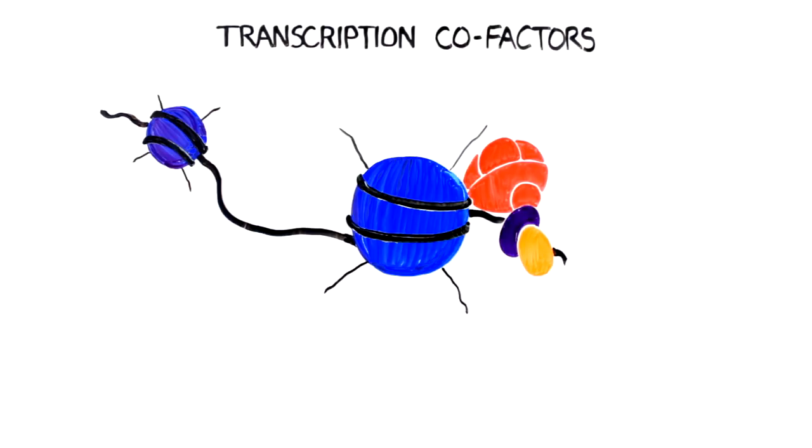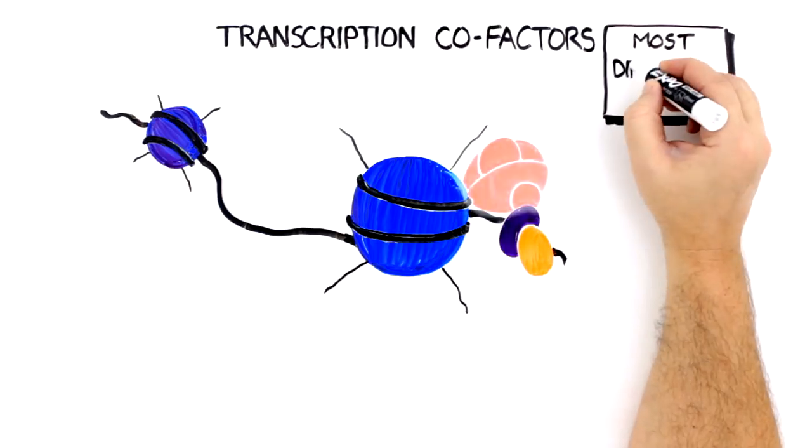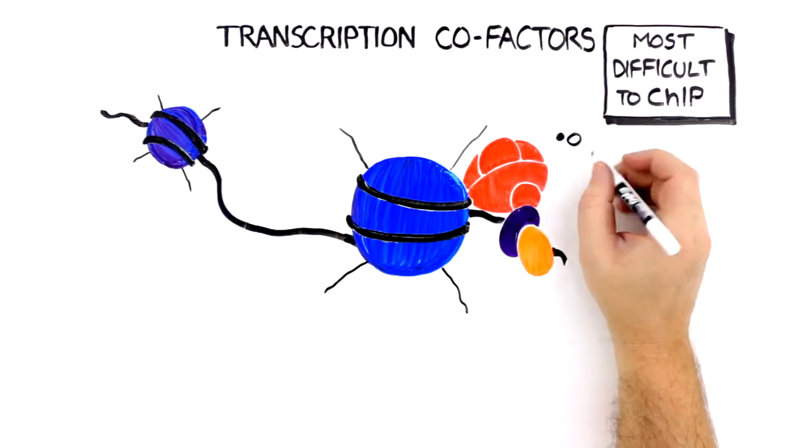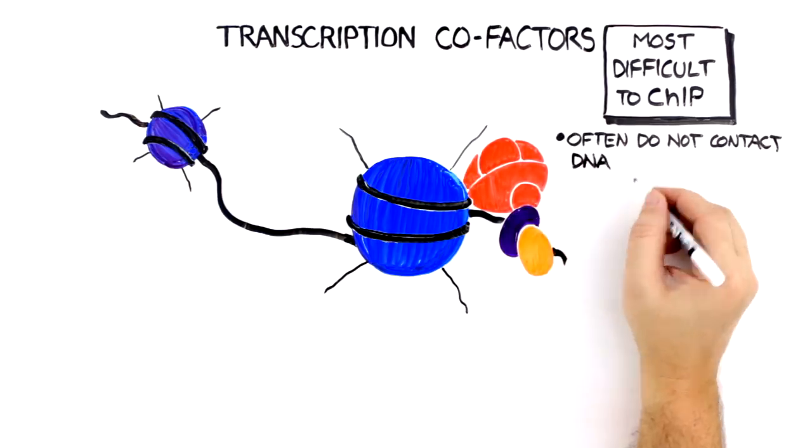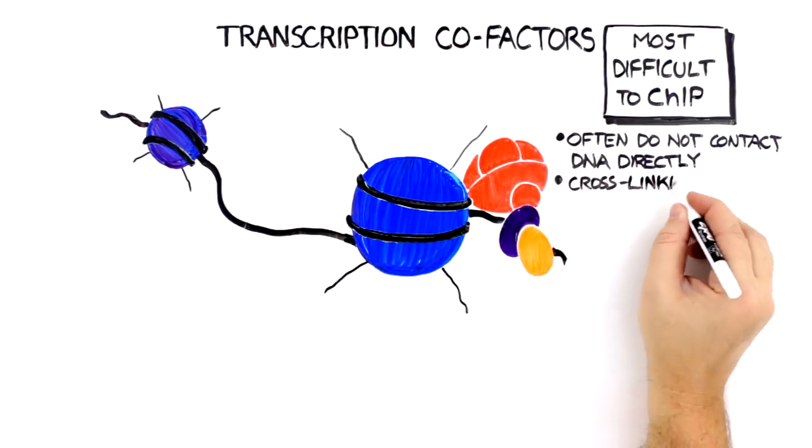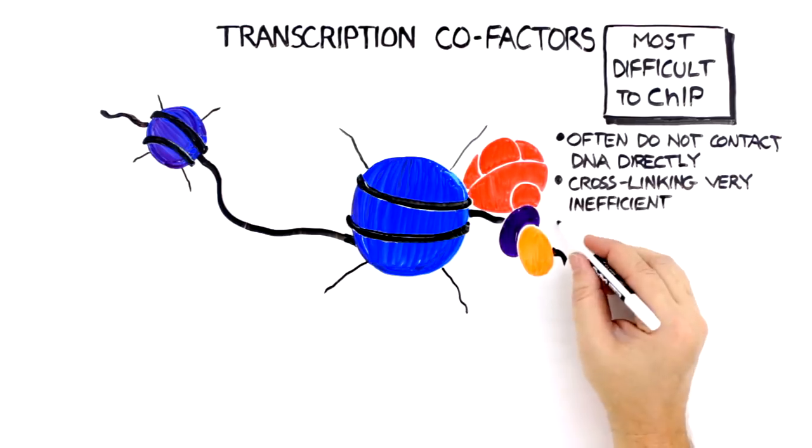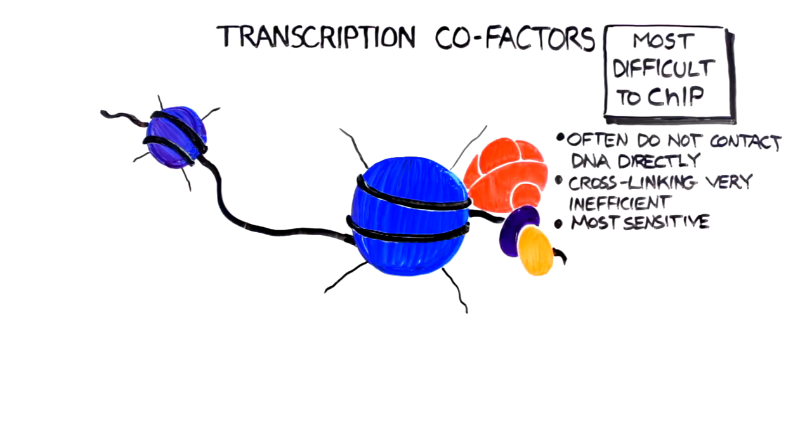Finally, transcription cofactors are the most challenging protein class to ChIP because they often do not contact DNA directly, which makes cross-linking very inefficient. Cofactors are the most sensitive proteins to harsh fragmentation conditions.